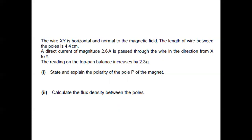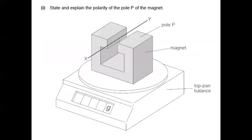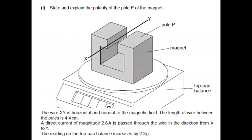Let's look at the first question. To further analyze the first question, let's look at the given information. It says here that a direct current of magnitude 2.6 amperes is passed through the wire in the given direction. Let's label that using an arrow.